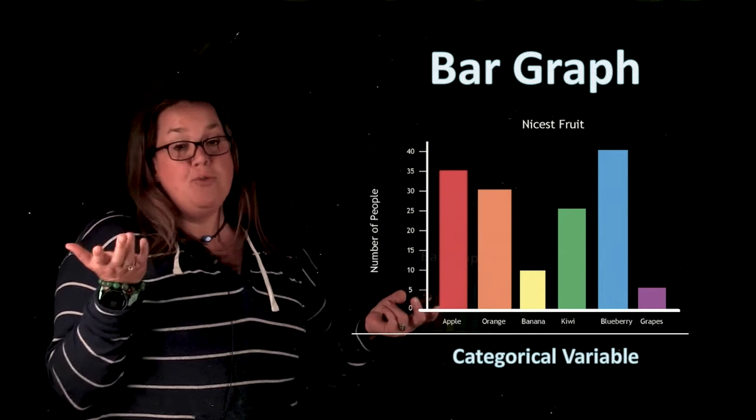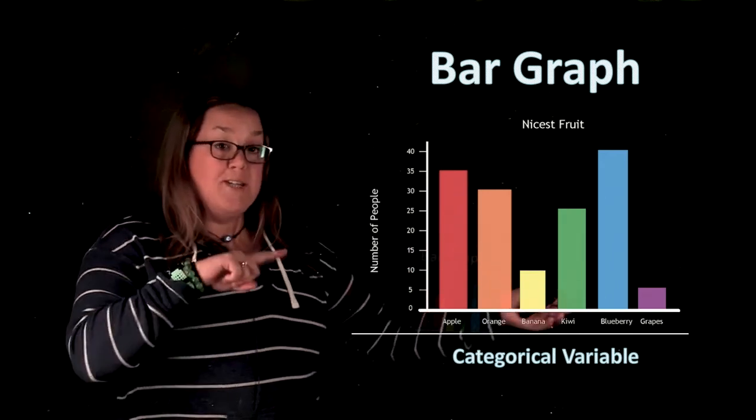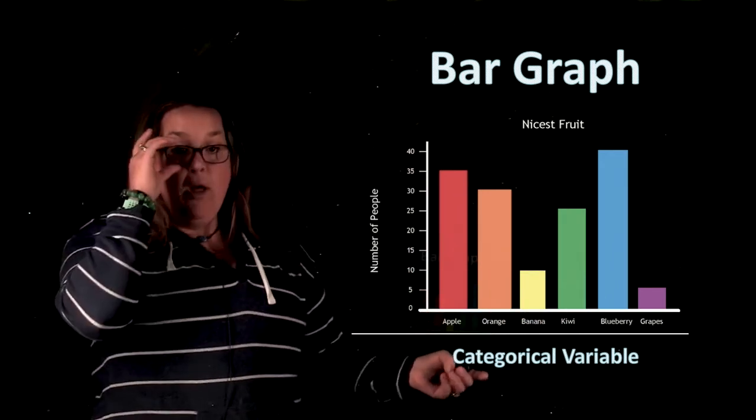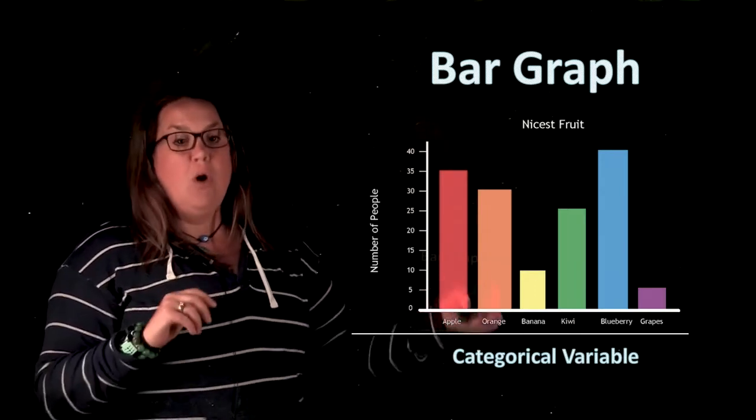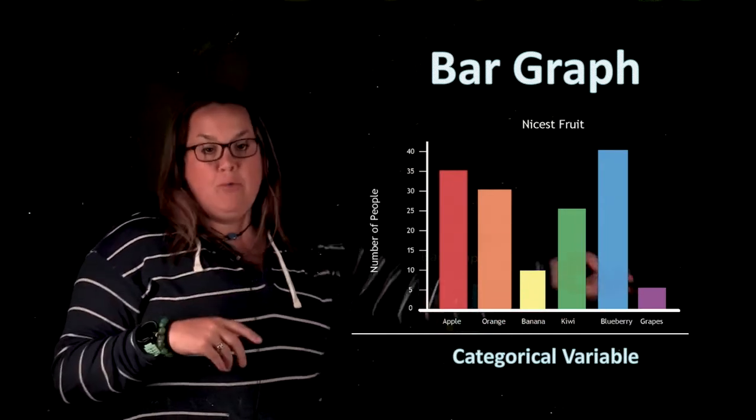It's the nicest fruit and we have different categories within that categorical variable. So we have apple is one category within the categorical variable, orange, banana, kiwi, blueberry, and grapes.